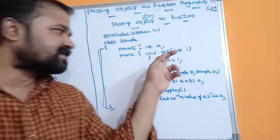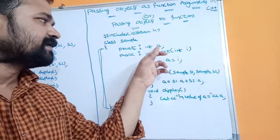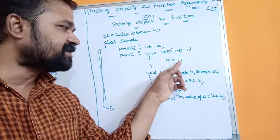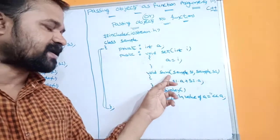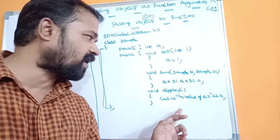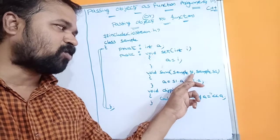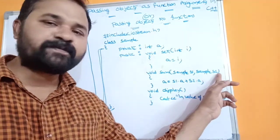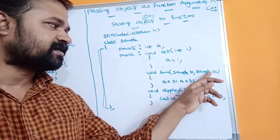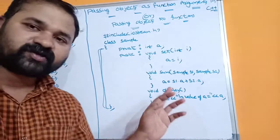The first function name is set, the second is sum, and the third is display. The set function is used to assign a value to the member variable a — it accepts an integer value i and initializes a to i. The sum function has a void return type and accepts two arguments: sample object s1 and sample object s2.